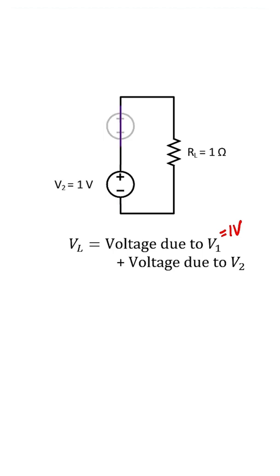And if I zero out source 1, I see that the voltage due to source 2 is also 1 volt. They add, giving 2 volts, which is correct.